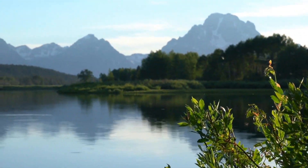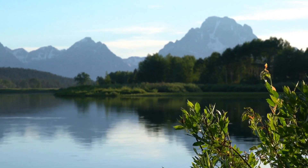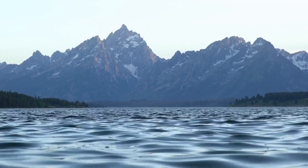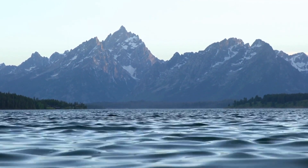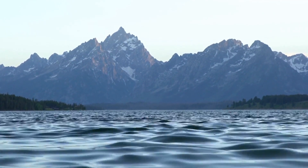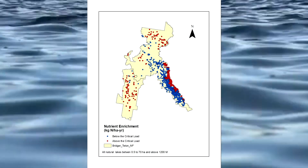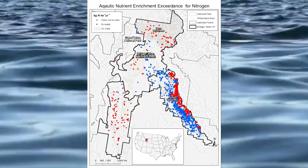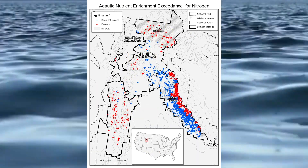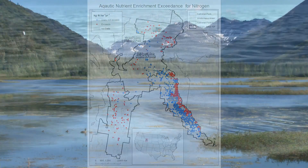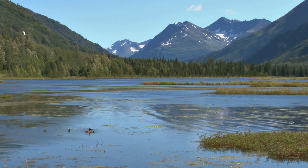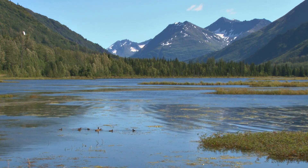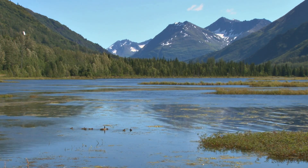Let's take a closer look at what this critical load means for the Bridger-Teton region. Applying the critical load of 4.1 to lakes above 1,200 meters in this area suggests that nitrogen deposition is above the critical load for about 39% of the 987 lakes examined. This indicates that many lakes in this region are at risk for increased algal growth because the nitrogen deposition is too high.